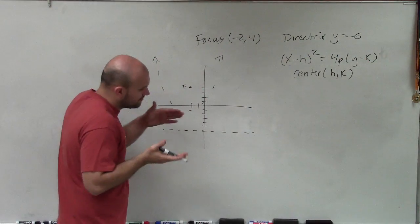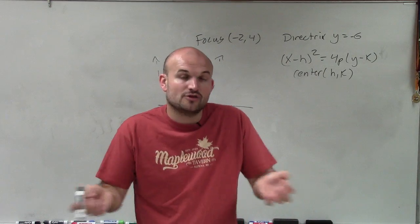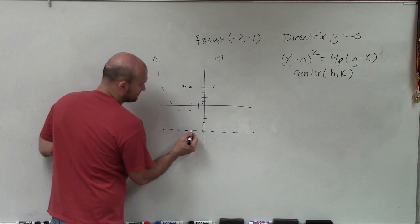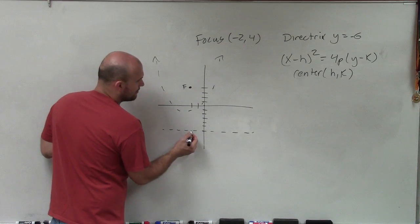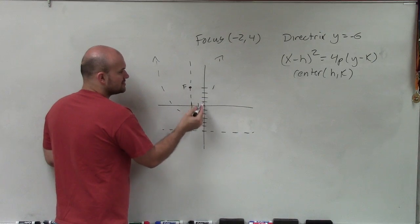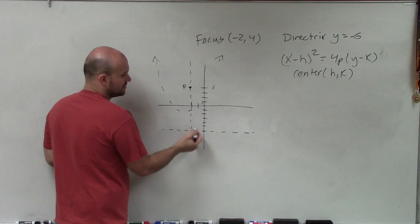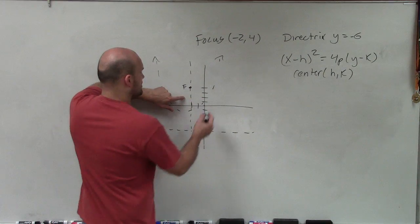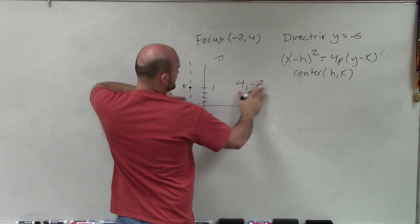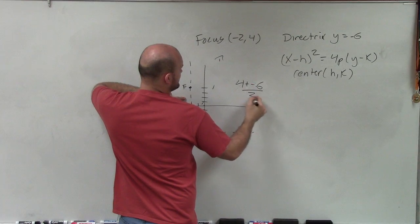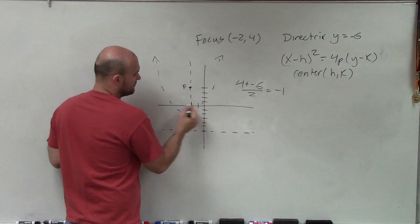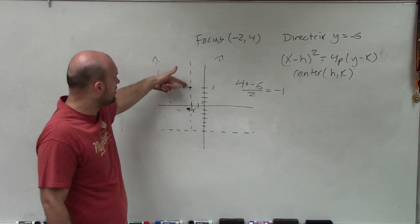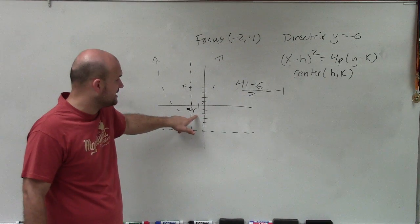Because between the focus and the directrix, the definition of a parabola is that all the points on the parabola are equidistant from the focus to the directrix, including the vertex. The vertex is on the axis of symmetry with your focus, which is perpendicular to the directrix. So since the focus is at y equals 4 and the directrix is at y equals negative 6, I find the midpoint: 4 plus negative 6 divided by 2 gives negative 1. Therefore, my vertex is at y equals negative 1.